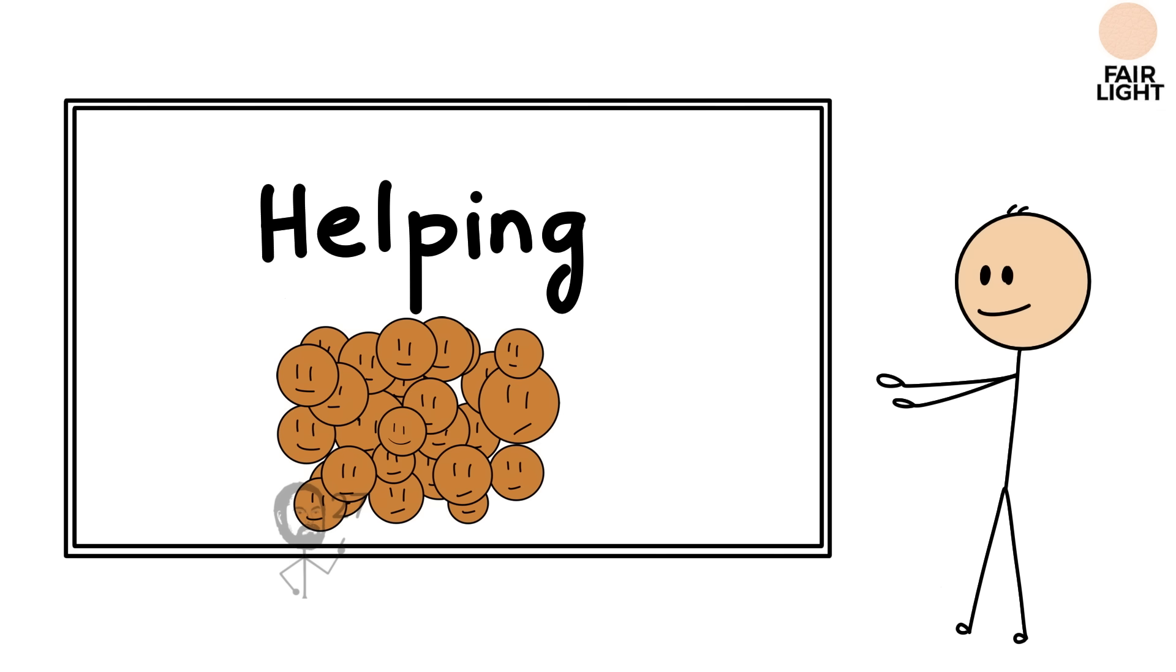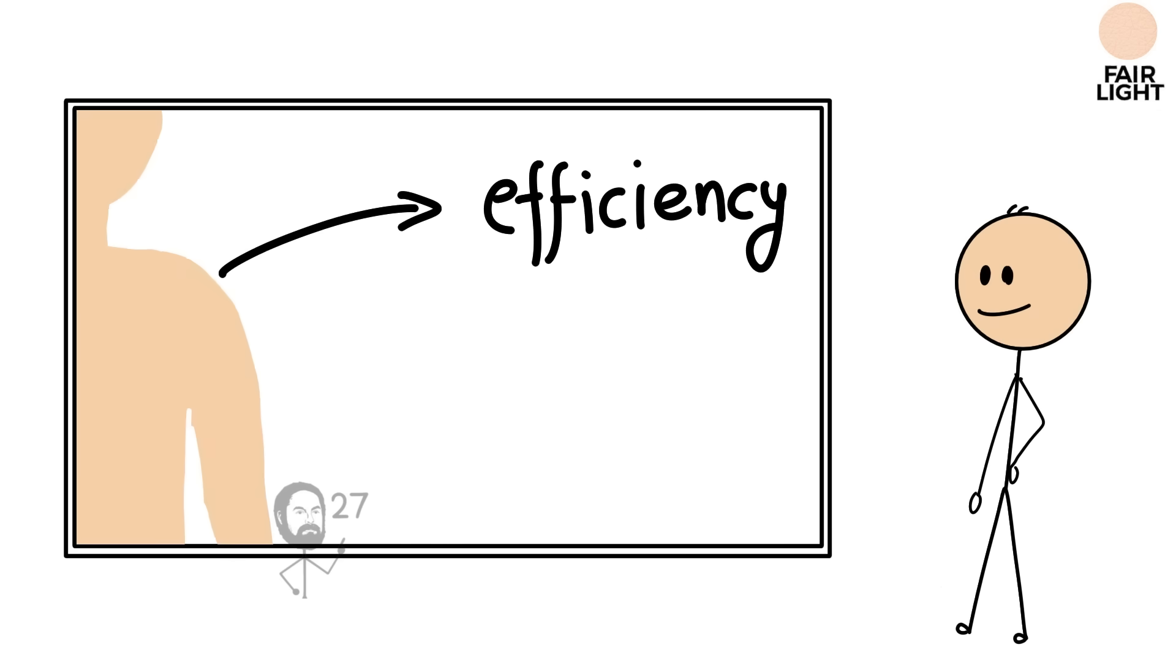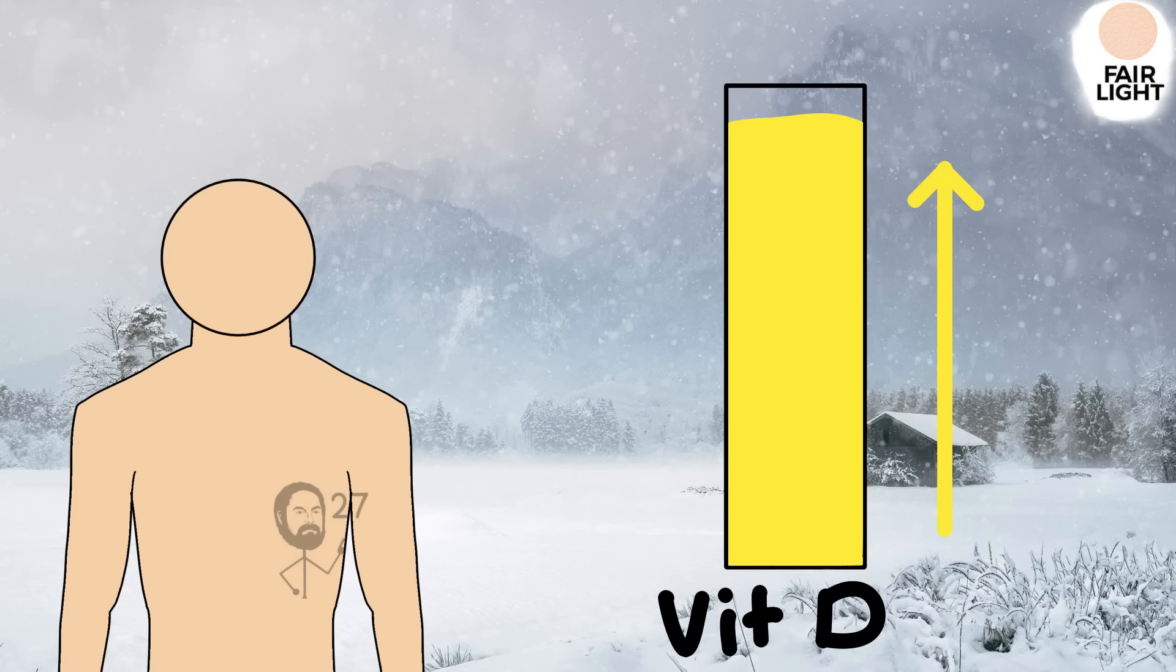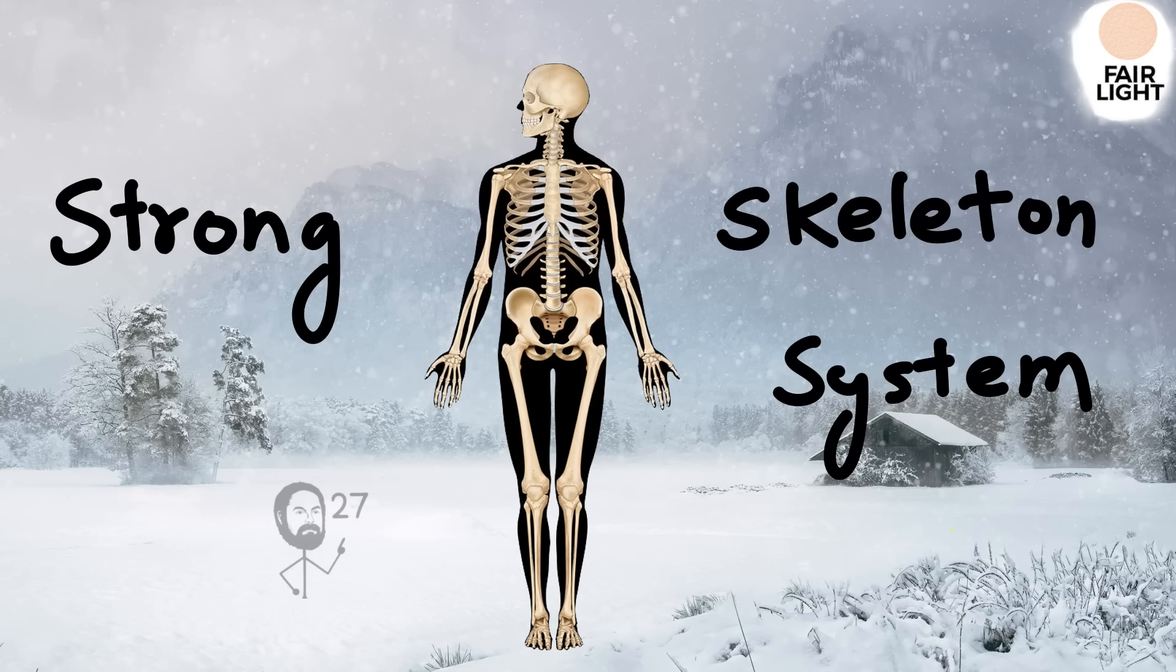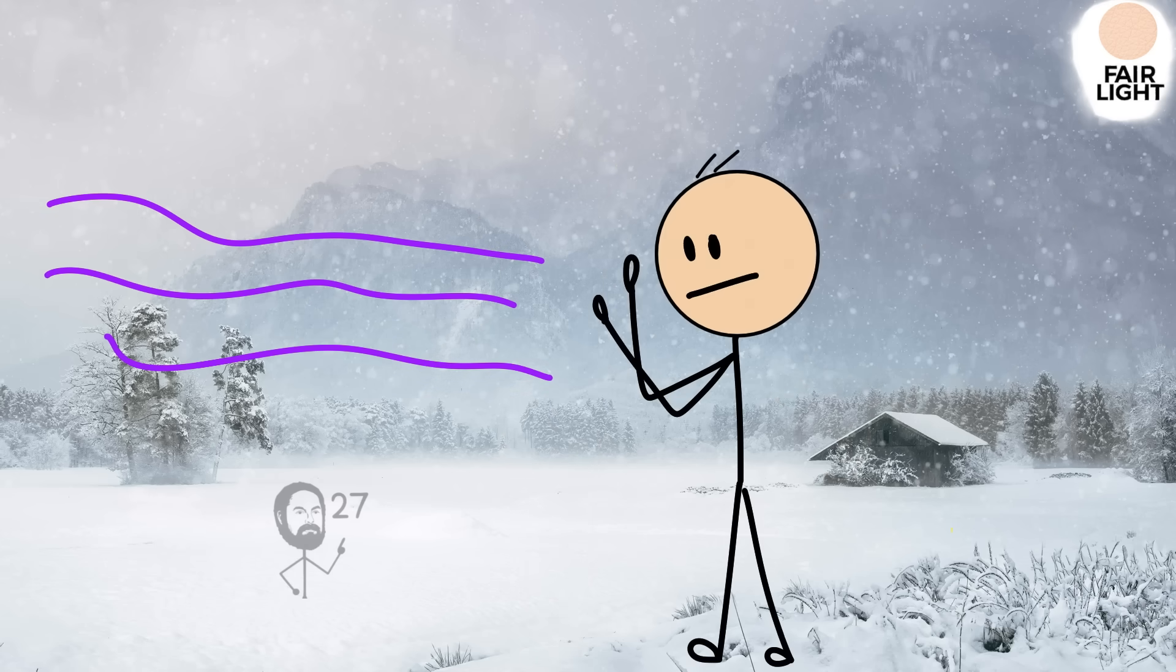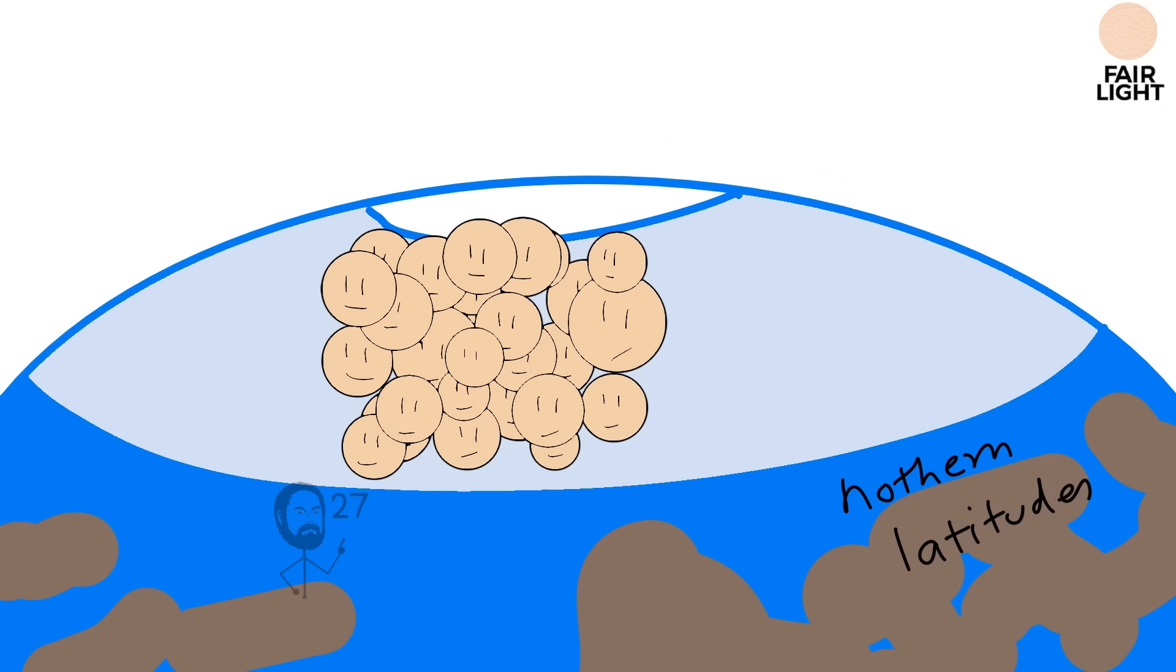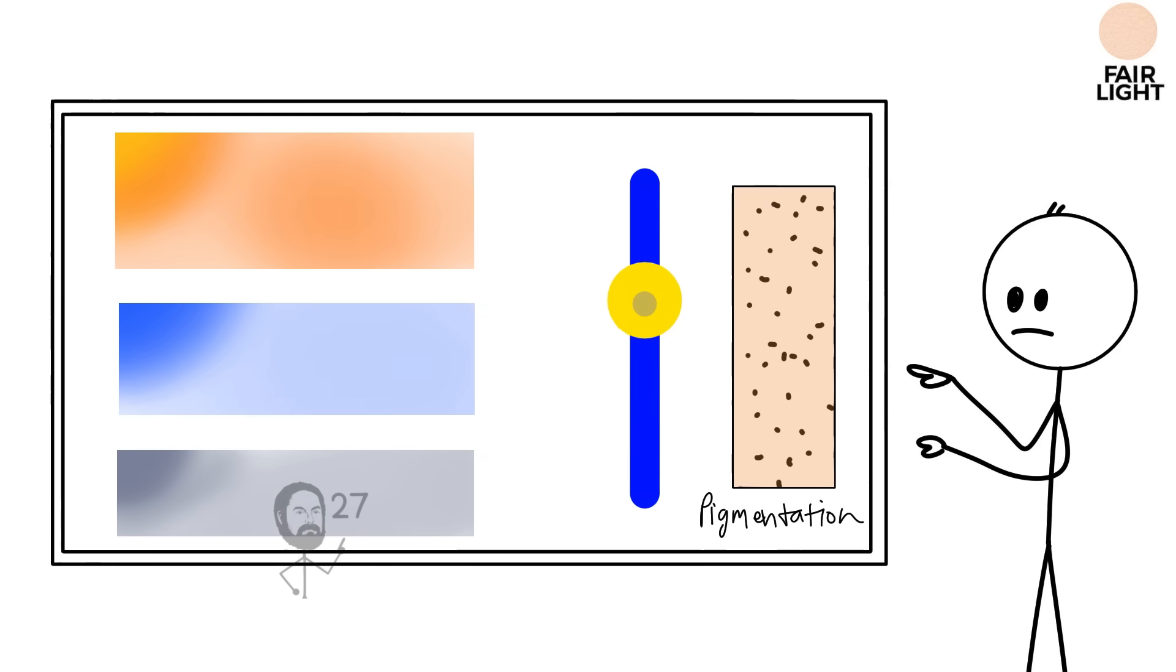The evolutionary advantage of fair light skin lies in its efficiency rather than its protection. While it burns more easily under strong sunlight, it maximizes vitamin D synthesis in conditions of low solar exposure. This balance ensured survival in climates where maintaining strong skeletal systems was more important than enduring extreme ultraviolet radiation. Over generations, this adaptation allowed communities in northern latitudes to thrive despite long, dark winters, making fair light skin a clear example of how the body fine-tunes pigmentation to match environmental light levels.